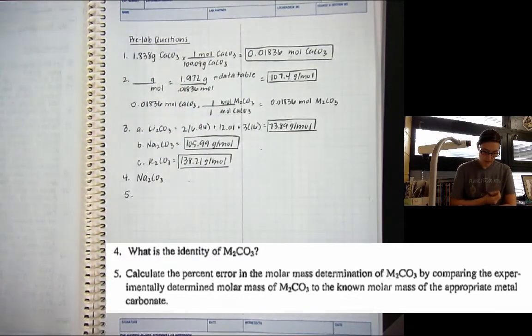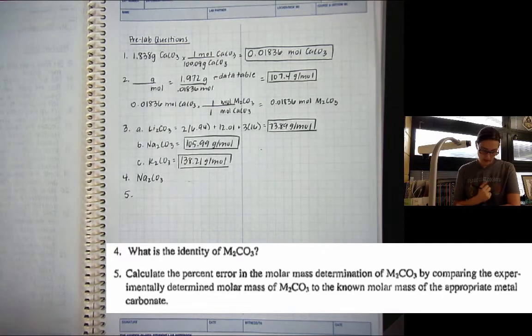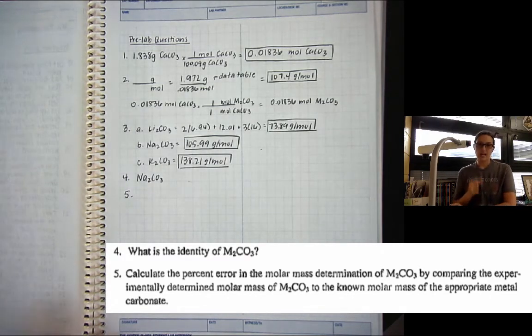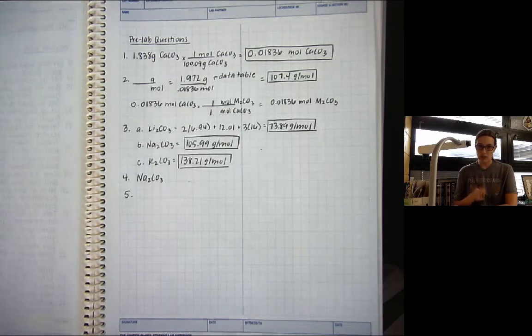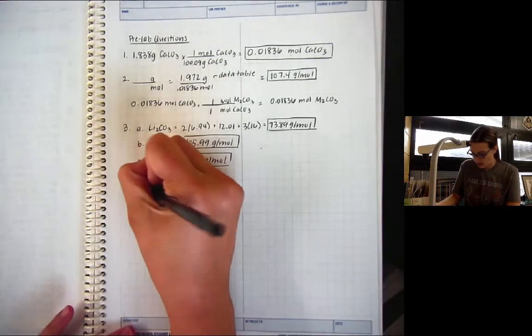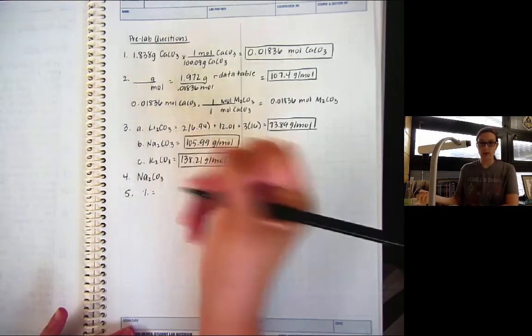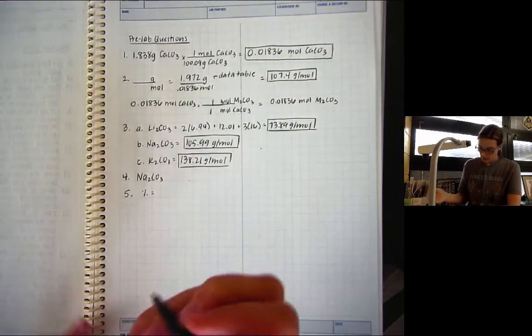Now, the last pre-lab question says, Calculate the percent error in the molar mass determination of M2CO3 by comparing the experimentally determined molar mass to the known molar mass. Percent error is a calculation you need to know. So if you need to write this somewhere else as well so that you have it, do that.